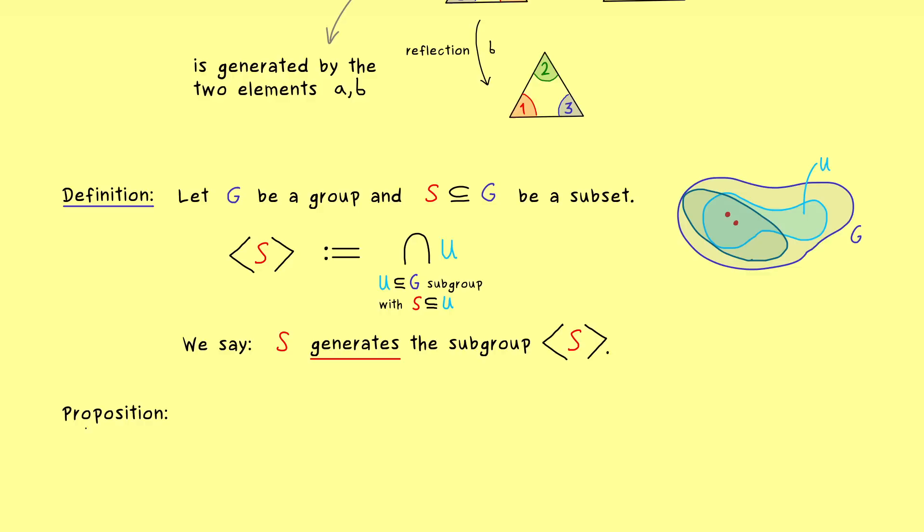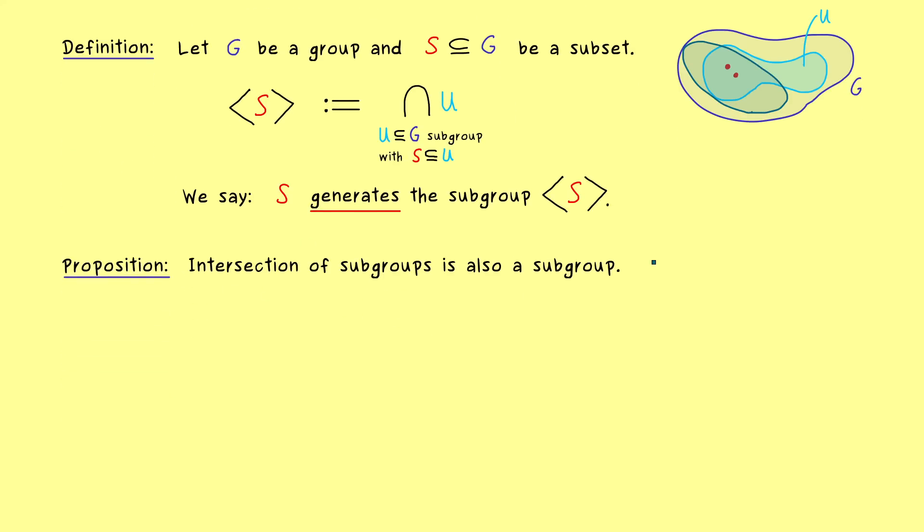But before we talk about examples I would say let's clear up the gap in this definition. Indeed, this proposition is easy to formulate: Any intersection of subgroups is a subgroup again. So you see this is a very general thing. It does not work with the unions, but an intersection of subgroups is always a subgroup.